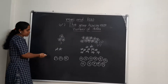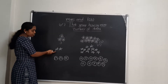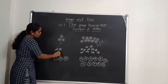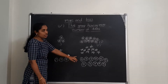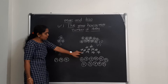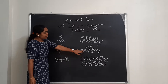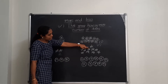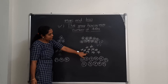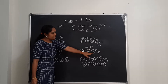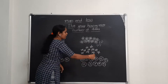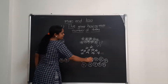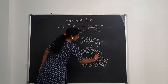You have to pick the group which is having more number of items. Let us start counting stars. Here the group is having one, two — two stars. Let us count in the second group: one, two, three, four, five, six, seven, eight, nine, ten, eleven. Here the count is more, so you have to pick this group.